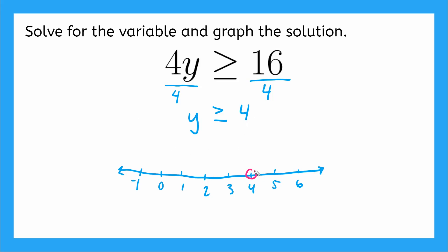So I draw my circle there. Do I fill it in? Yes. How come? Because 4 is included in my solution set because it's or equal to. And what direction does the arrow go? Well, y is greater than or equal to 4. So it includes all the numbers that are greater than 4. Perfect.